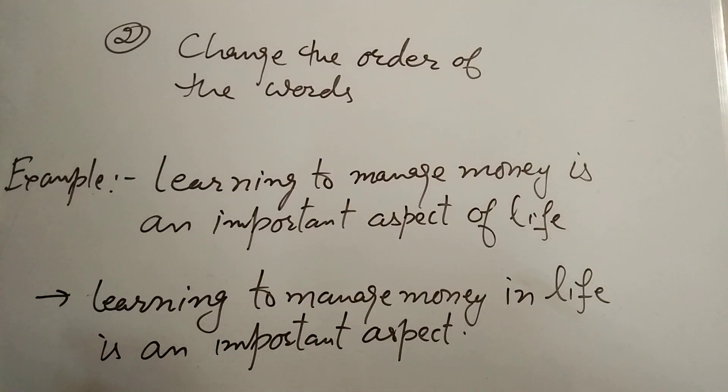Change the order of the words. For example, learning to manage money is an important aspect of life. So, this can be paraphrased like, learning to manage money in life is an important aspect. Or, this can also be paraphrased like that, learning how to manage money is one of the most important aspects of human life. In this way, you can add one extra word or you can delete or omit any word from the given sentence, but the sense will be the same.